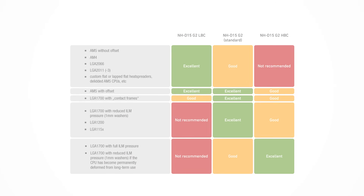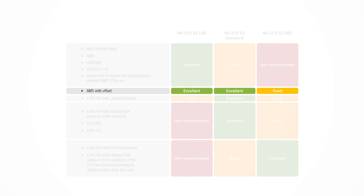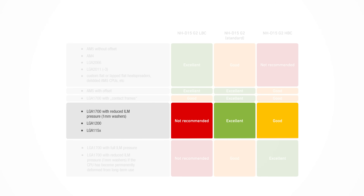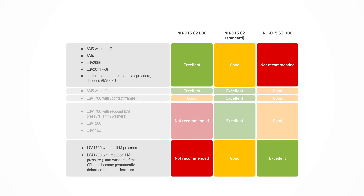So, which version should you choose? Our default recommendation for most users is to simply choose the medium base convexity standard version, since it will always provide excellent or at least solid results. It will offer you the best results on AMD AM5 with the offset mounting, and on Intel LGA1700 with the included 1mm shim washers, unless the CPU has already become permanently deformed from long-term use with full ILM pressure. And even when running LGA1700 CPUs with full ILM pressure, or when not using the offset mounting option on AM5, the standard version is still guaranteed to provide solid results while maintaining the flexibility of continuing to offer consistent results if you upgrade your system.